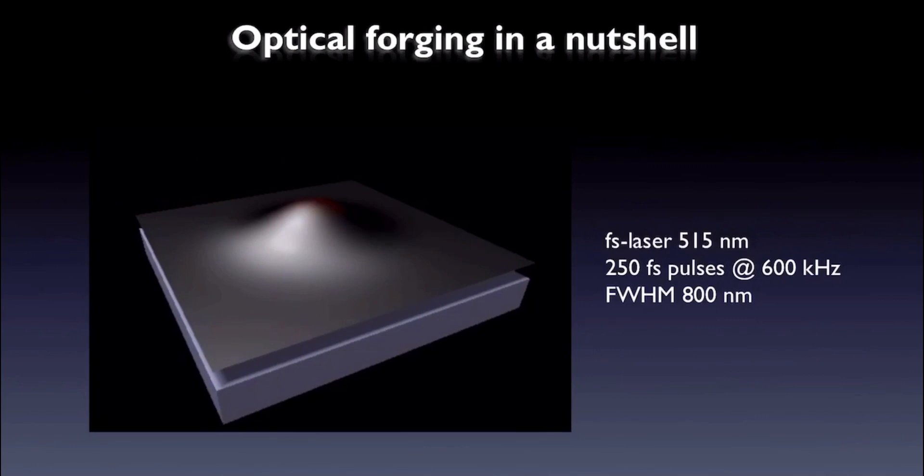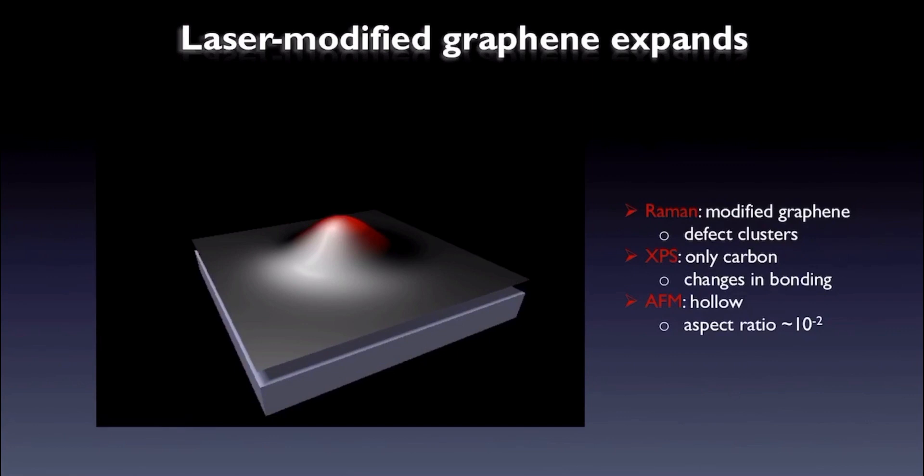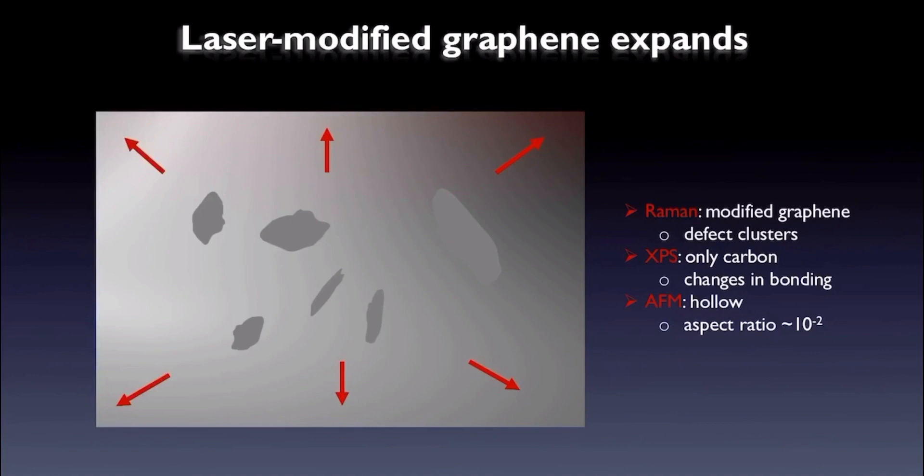Our present understanding is that blisters are created because the laser-modified graphene expands on average, so that the picture of graphene upon zooming in looks like this.